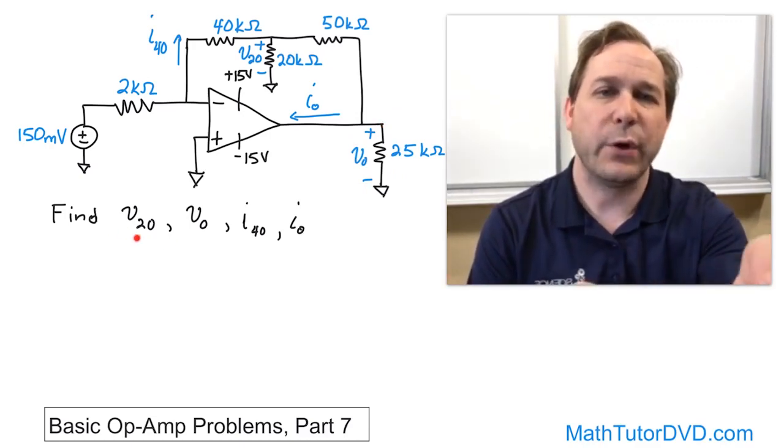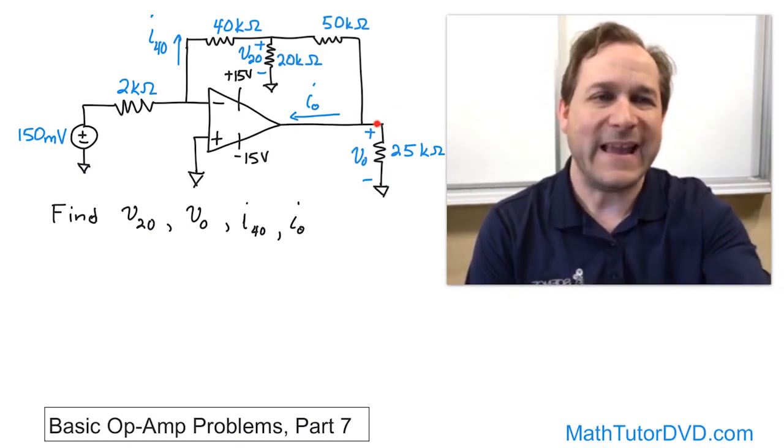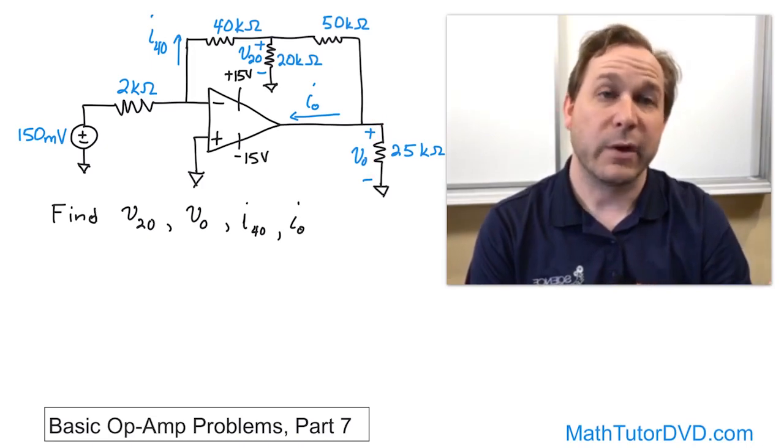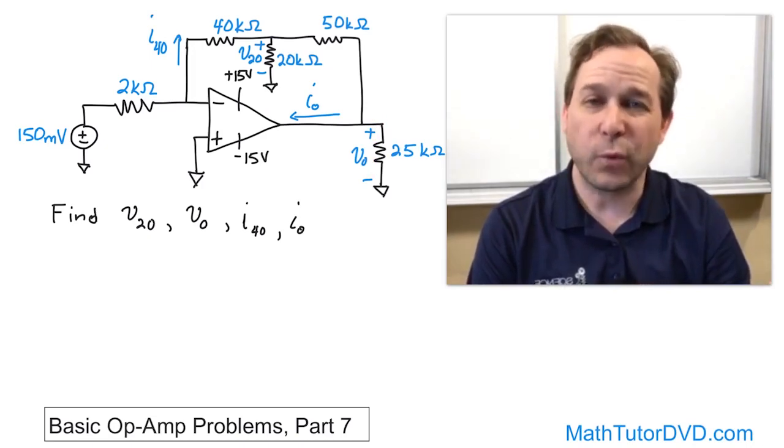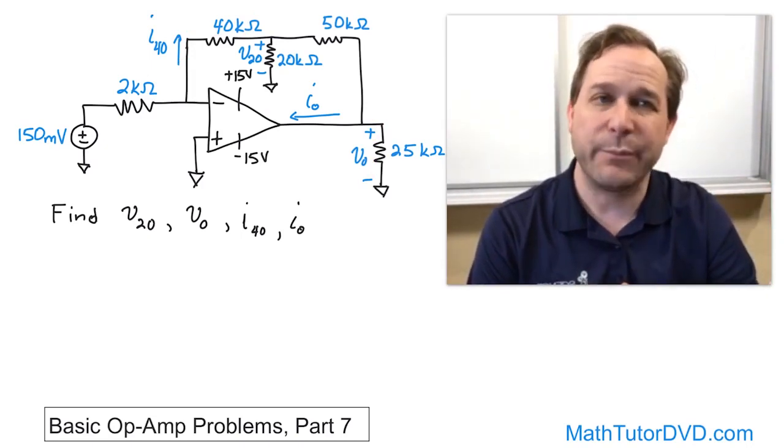We want to find the voltage across the 20-ohm resistor, which is the voltage across this resistance right there. We want to find the output resistance right there. We want to find the current through the 40-kilohm resistor, which is the current flowing up through that leg right there, and we want to find the output current.